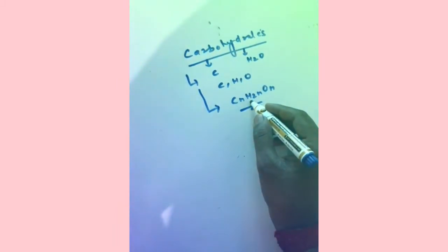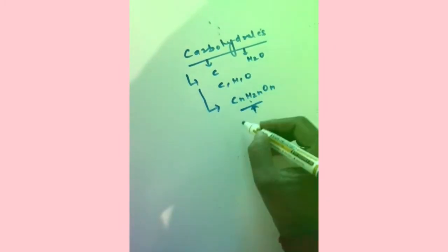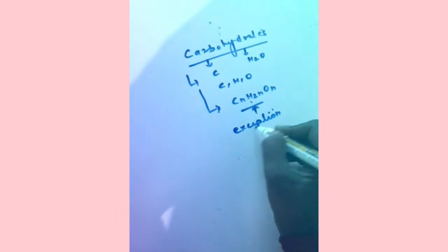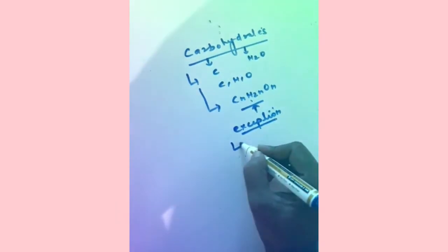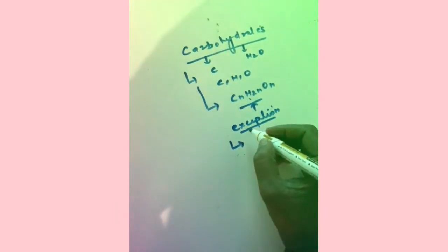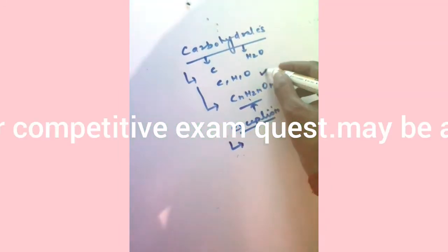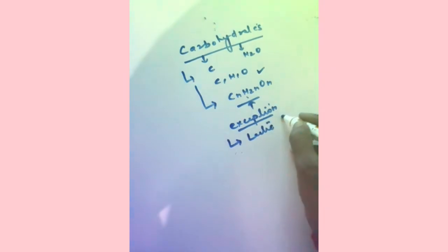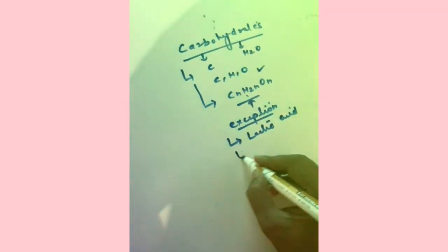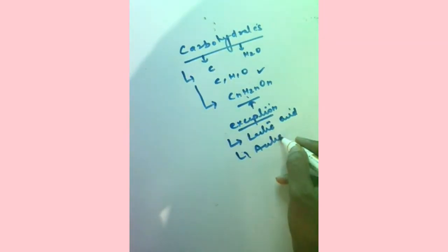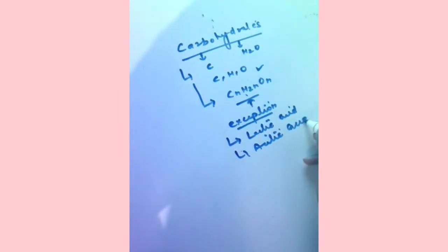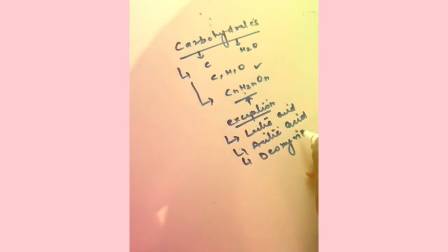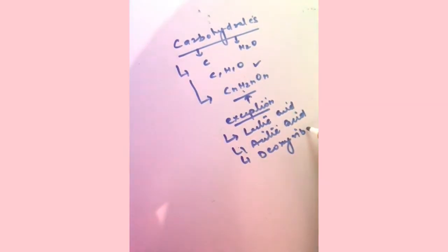If a compound does not follow this formula, then it is not a carbohydrate. However, some exceptions exist — some compounds show this formula but are not carbohydrates, like lactic acid, acetic acid, and deoxyribose. These follow the formula but are not classified as carbohydrates.